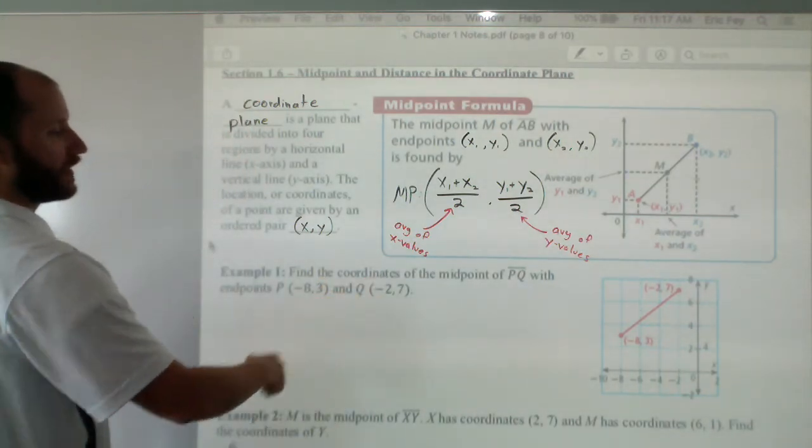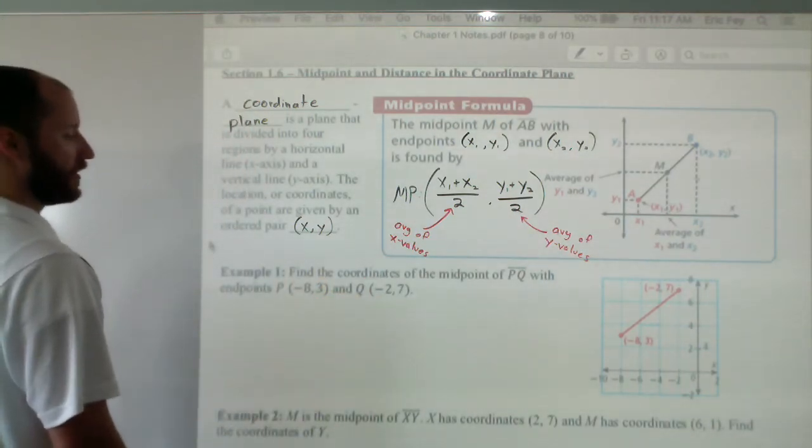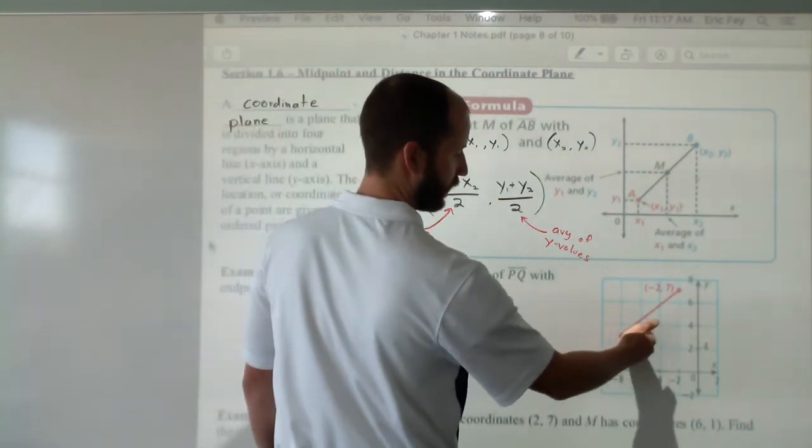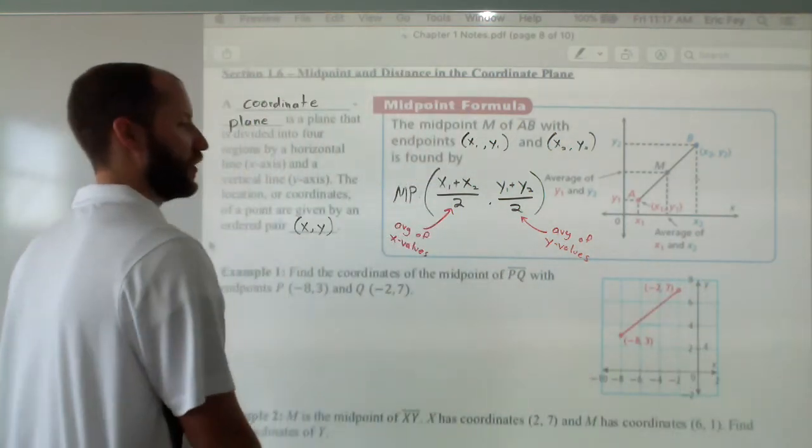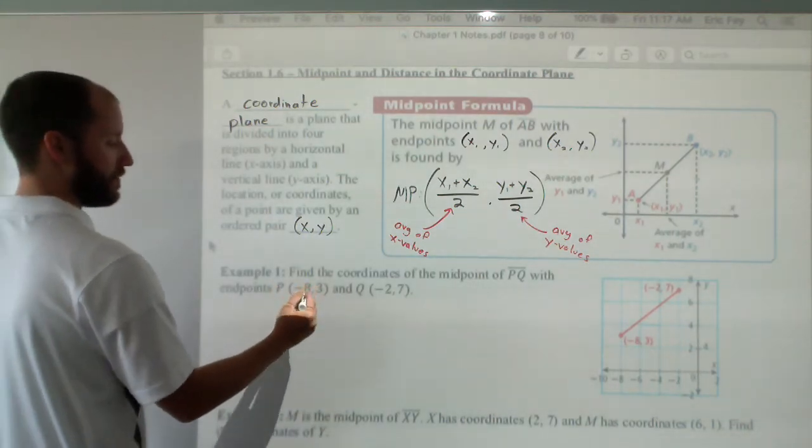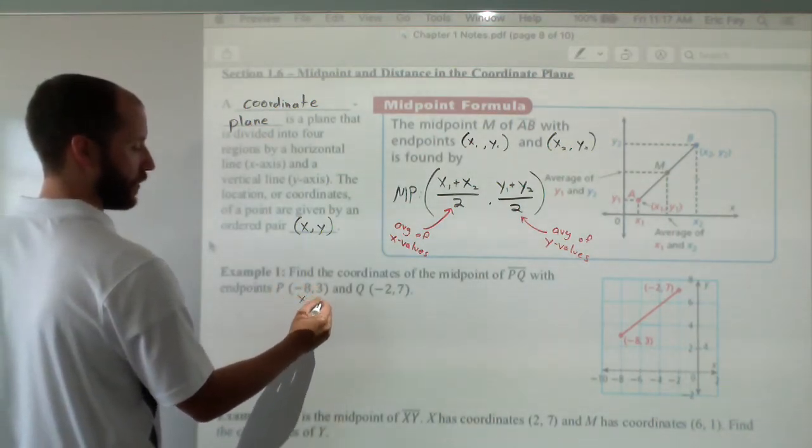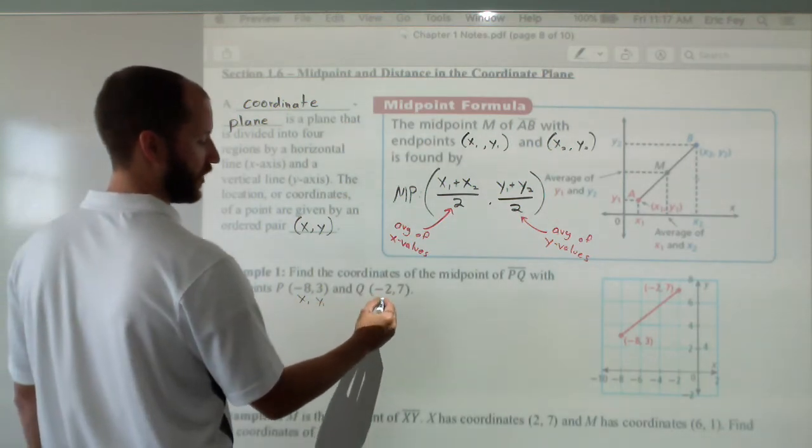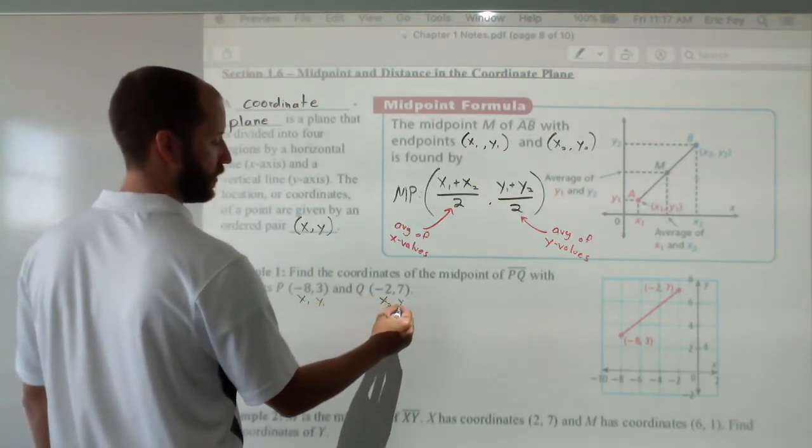So find the coordinates of the midpoint of line segment PQ with endpoints P, negative 8, 3, and Q, negative 2, 7. So let's take P, make that our first point, x1, y1. Let's make Q our second point, x2, y2.